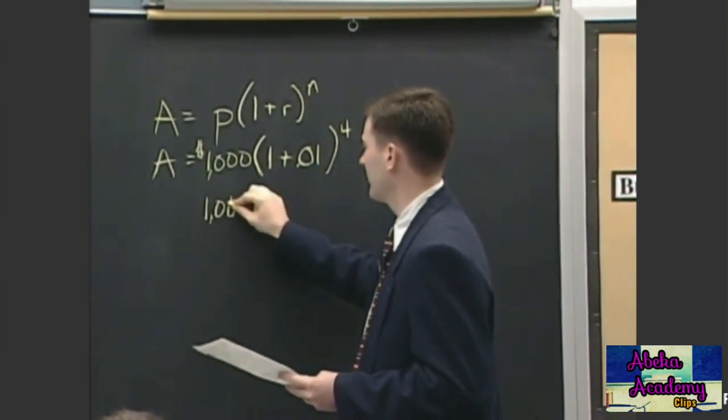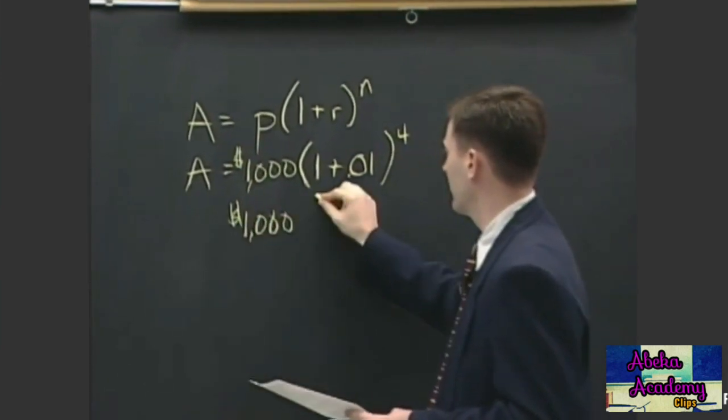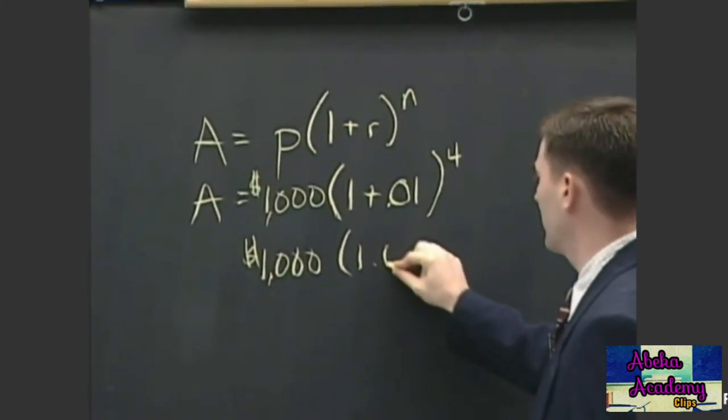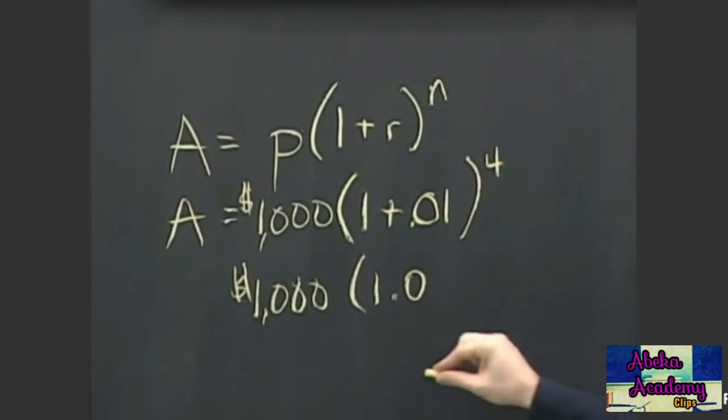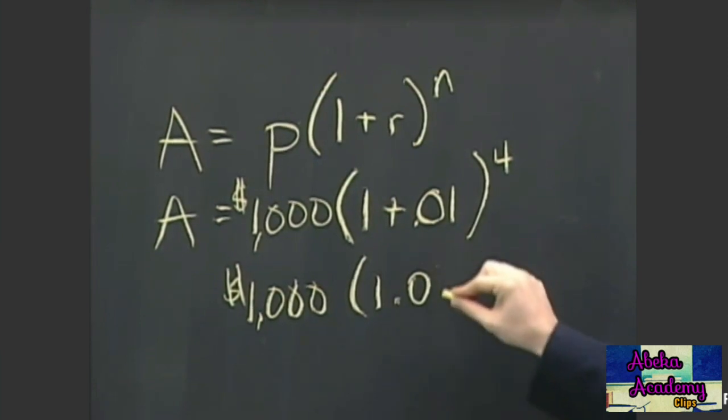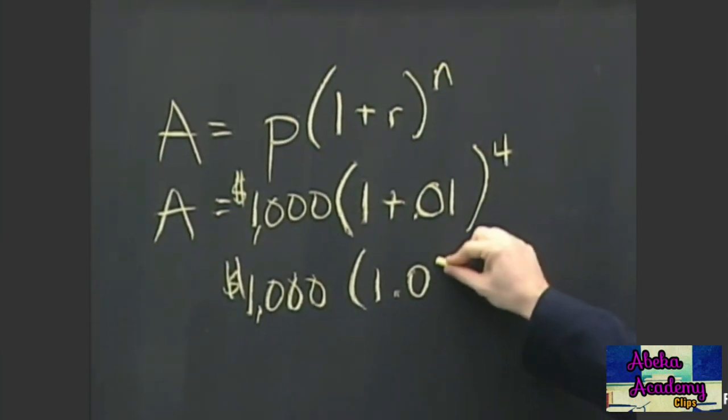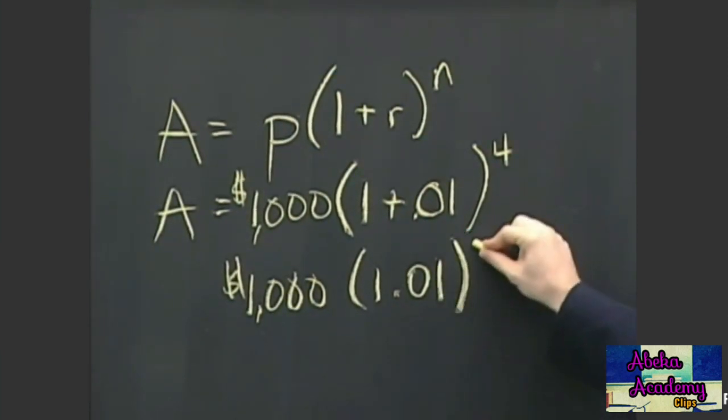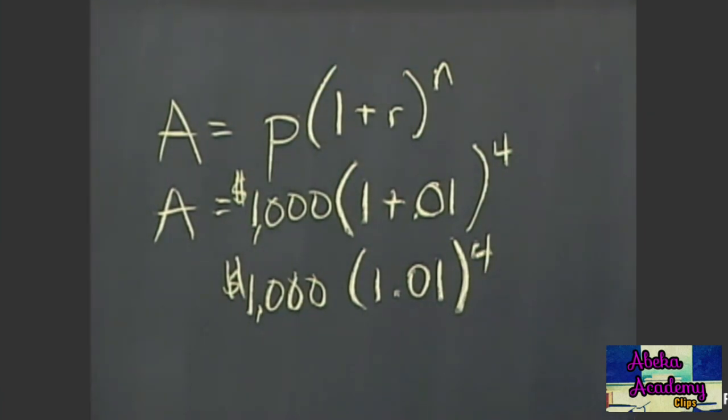A equals one thousand times one point... it'd be one point zero four or no, but it'd still be one point zero one. Okay, and then I'll just help you out there, right, just to speed things up a little.